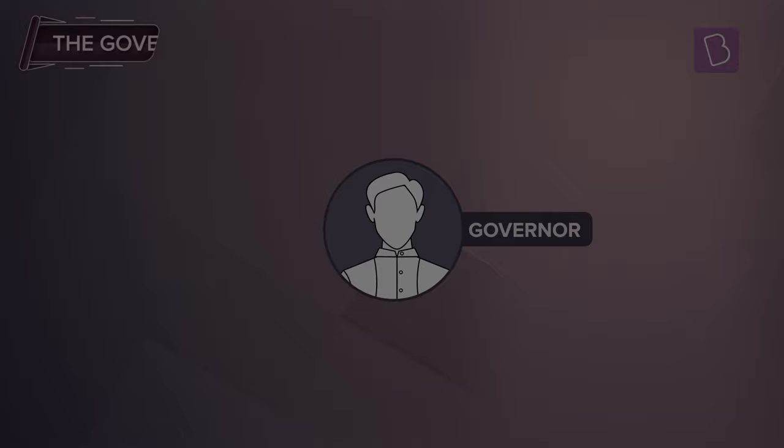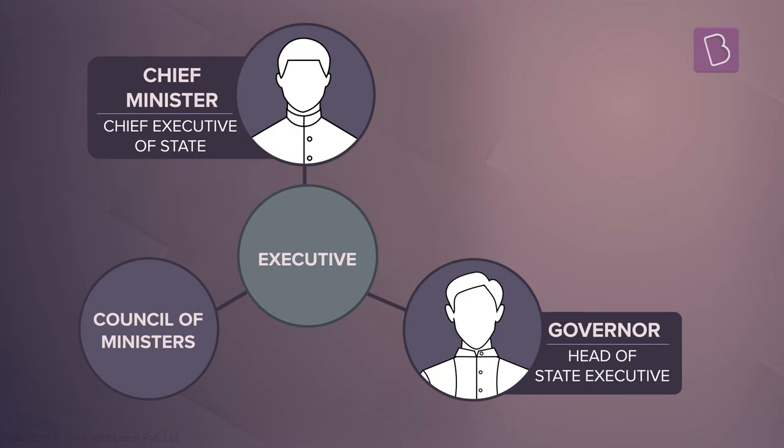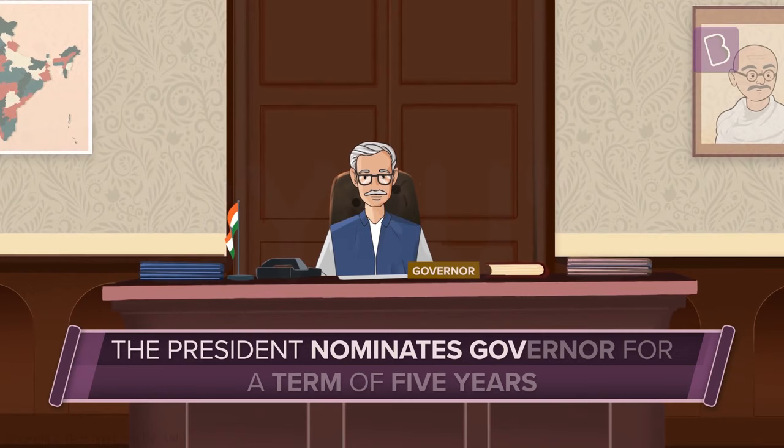The governor is the constitutional head of the state executive, but in actual working, the chief minister is the chief executive. The president nominates the governor, whose term of office is five years.